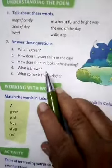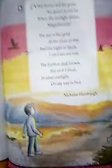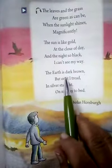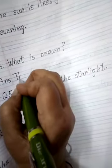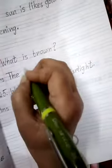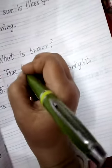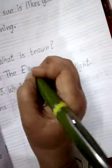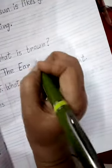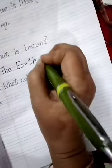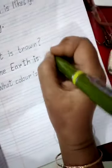Now the next question is: what is brown? Now look here. The earth is dark brown. So the answer is: the earth is brown.